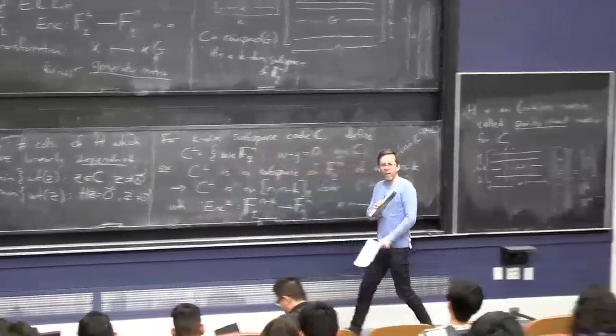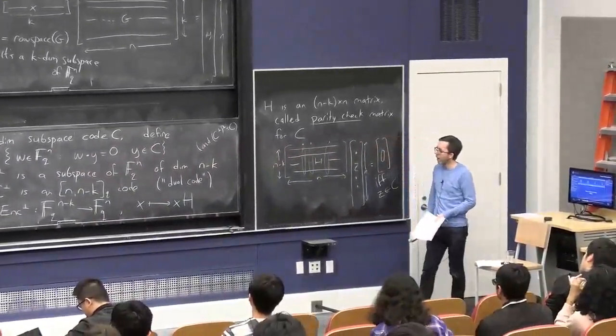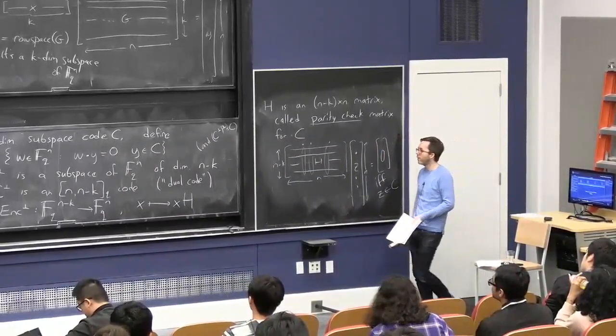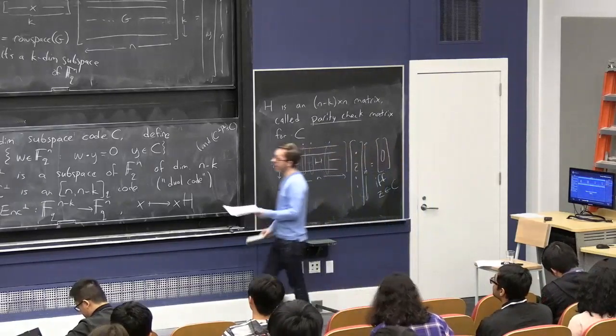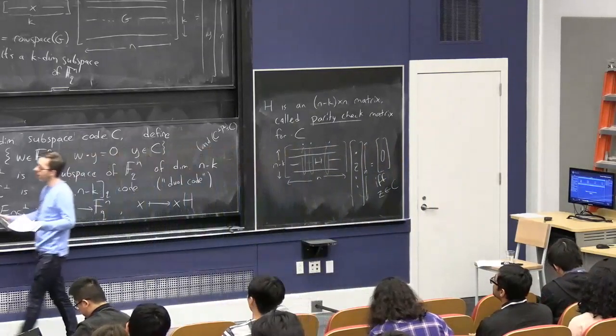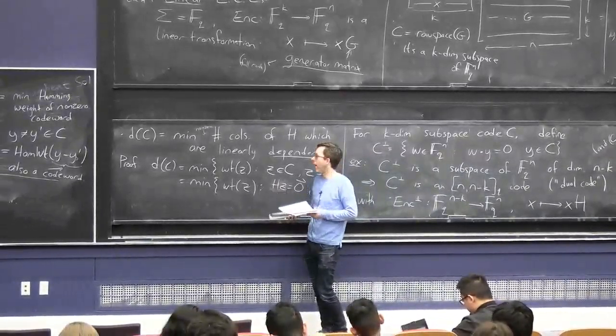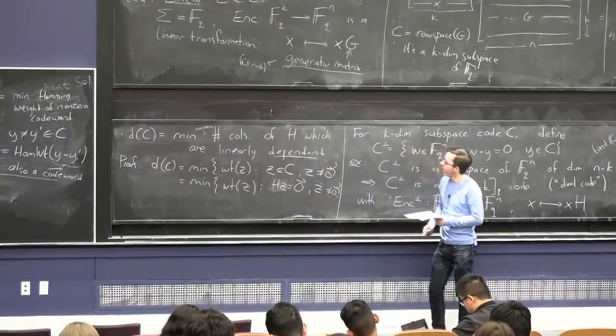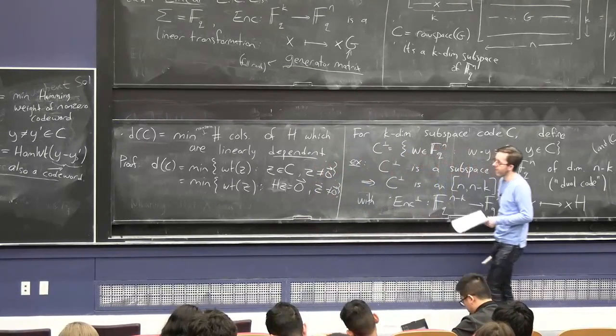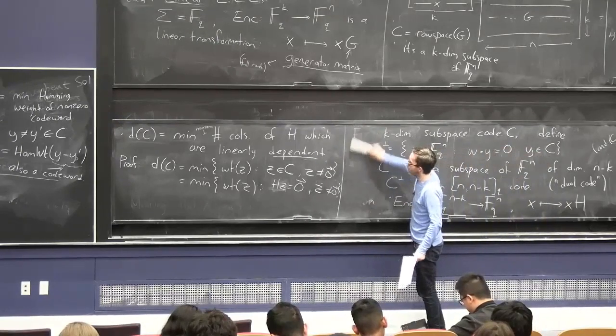So let's think of, for now, Q being 2. Maybe our favorite situation, we're thinking about binary codes, where the symbols are just 0 and 1. And let's say we're trying to find a code, a linear code, that has high rates, so like lots and lots of strings in it, that has some decent minimum distance.